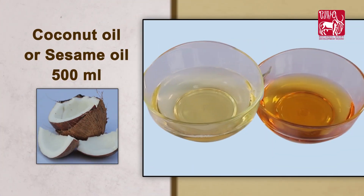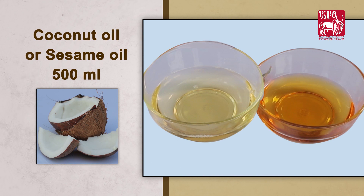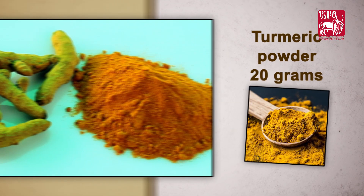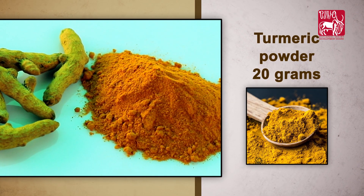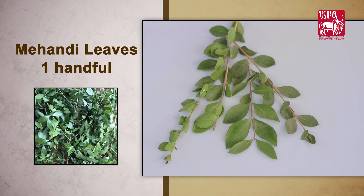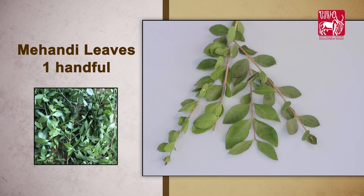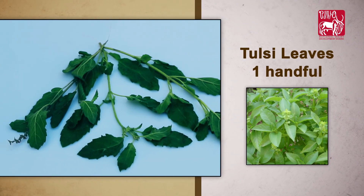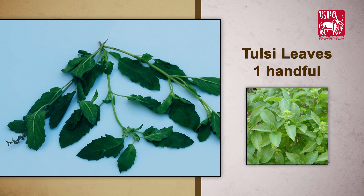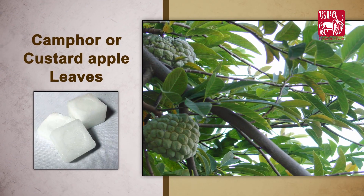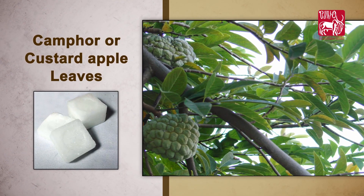Coconut oil or sesame oil — 500 milliliters, turmeric powder — 20 grams, mehendi leaves — one handful, tulsi leaves — one handful, camphor, and custard apple leaves.